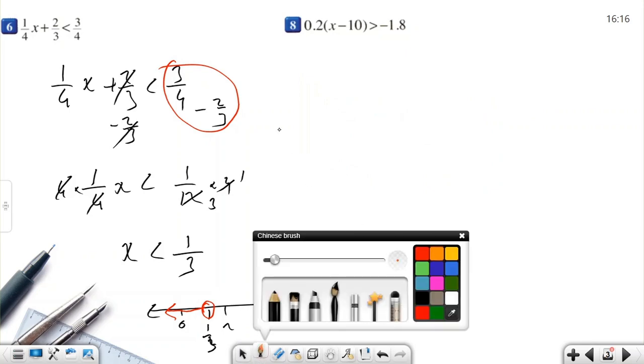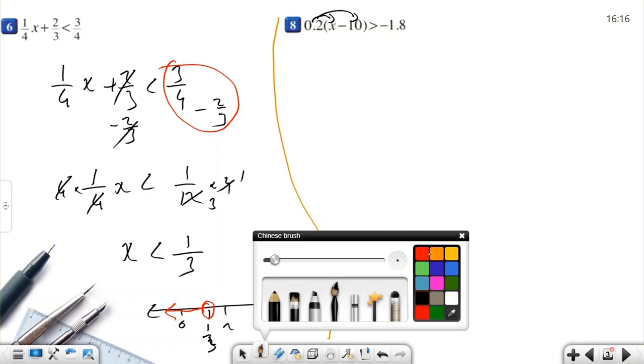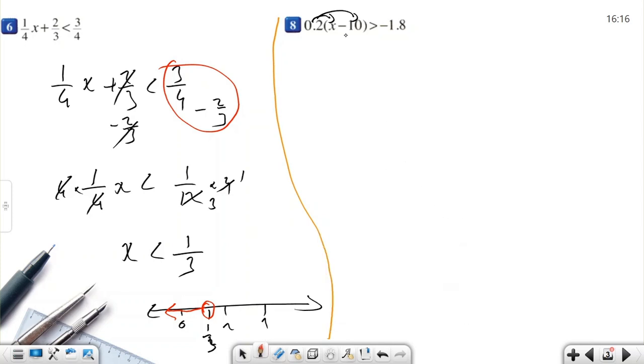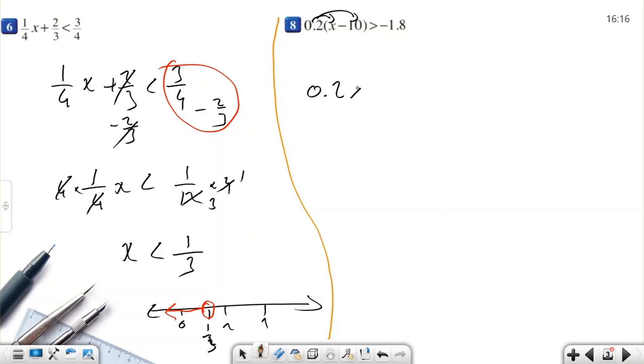Now we have another question. As you see, there is a parenthesis. First we need to get rid of this parenthesis. I'm going to use distributive property. I need to multiply 0.2 to terms inside the parenthesis. 0.2 times x. 0.2x minus 0.2 times 10 is 2, greater than negative 1.8.